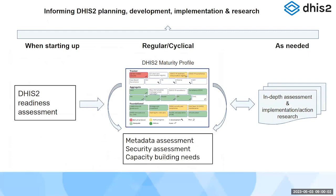We have different tools to help assess you along the way. The DHIS2 maturity profile can be revisited at regular intervals, maybe every second year, just to see where you're at. We have more in-depth metadata assessment tools — scripts you can run on your system to check if you're collecting duplicate data elements, or collecting data not used in any indicator or dashboard. We have tools for mapping capacity needs and training plans. And we also have a DHIS2 readiness assessment tool — a set of questions that can help highlight gaps or things you need to think about before getting started.